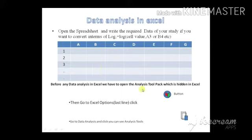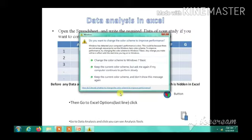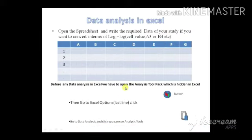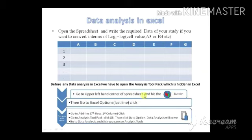Another important thing before using Excel is to open the Analysis ToolPak, which is hidden in MS Office Excel and not explicitly available by default. To extract it: go to the upper left-hand corner of the spreadsheet, click that button, go to Excel Options, then Add-ins (seventh row, first column), click Go, select Analysis ToolPak, and click OK.